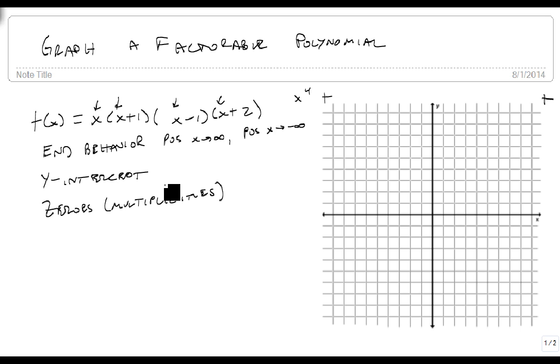The y-intercept we get by plugging in zero, and that's real easy because we got this term right here. So the y-intercept is at the point zero, zero, which means it's also one of our zeros. We get a zero at minus 1, at 1, and at minus 2. And because all of the degrees are 1, they're all multiplicity 1, which means they pass through.